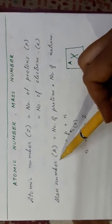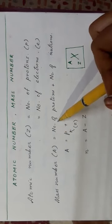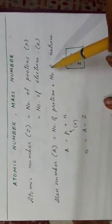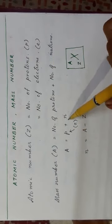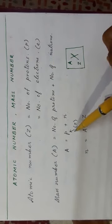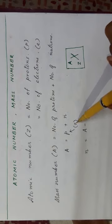Mass number is denoted by A. This is equal to the number of protons plus the number of neutrons. So A equals P plus N. P is equal to Z, that's the atomic number. So the mass number is equal to the atomic number plus the number of neutrons.